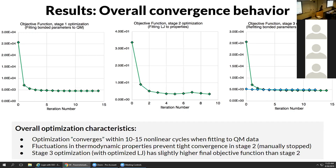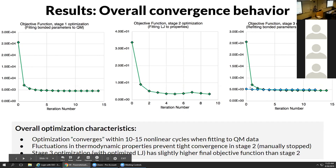In the second stage, because we're calculating thermodynamic properties, there's some statistical noise, meaning the objective function can't converge as precisely. Things go up and down a bit, and you have to terminate manually since it's hard to define perfect convergence criteria. After freezing the Lennard-Jones parameters, we re-fit to the QM properties again, shown as the blue points, and end up with an objective function just very slightly higher than from stage one.